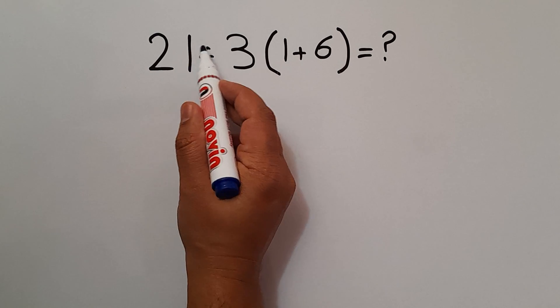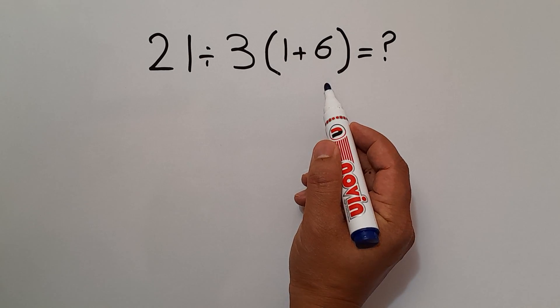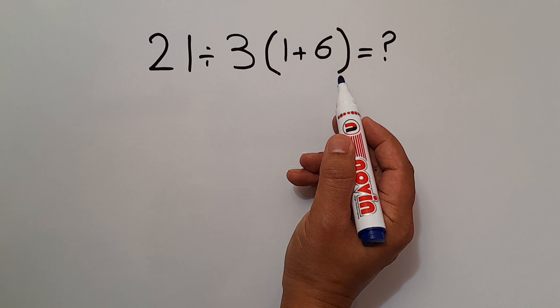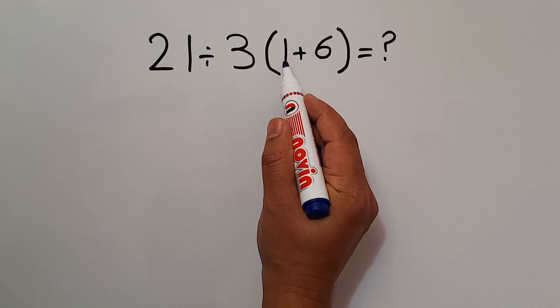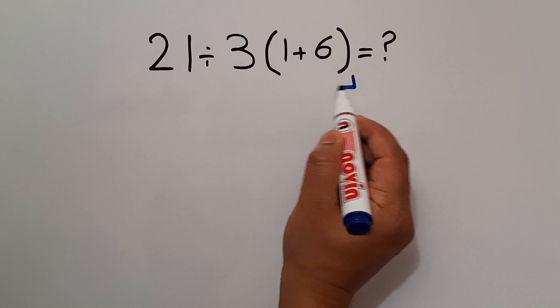In this expression, we have one division, one multiplication, and parentheses. As we know, parentheses has higher priority than other operations. So first, we have to handle these parentheses. 1 plus 6 gives us 7.